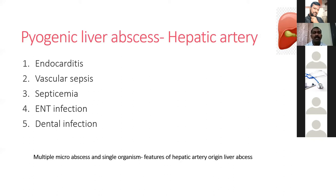Hepatic artery origin: any systemic infection following endocarditis or vascular sepsis/septicemia spreads via the celiac artery and hepatic artery producing multiple pyogenic liver abscesses. These are usually micro-abscesses with a single organism, whereas biliary origin abscesses are macro-abscesses with multiple organisms.